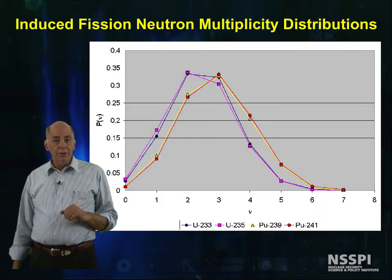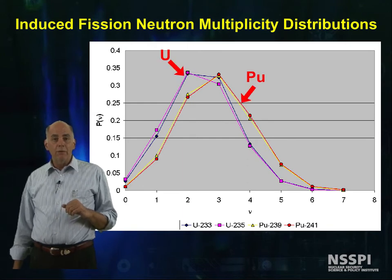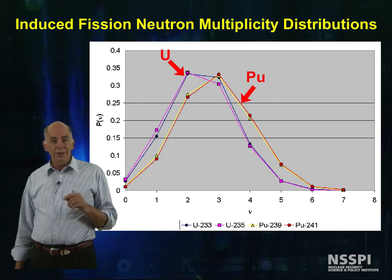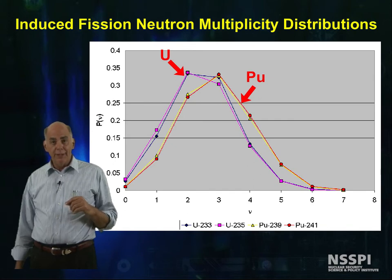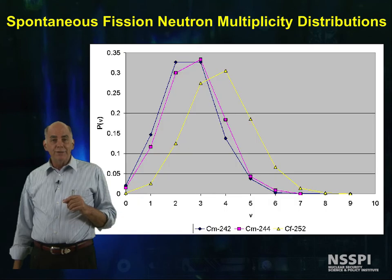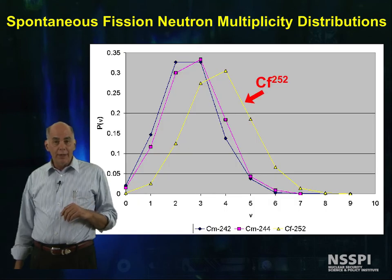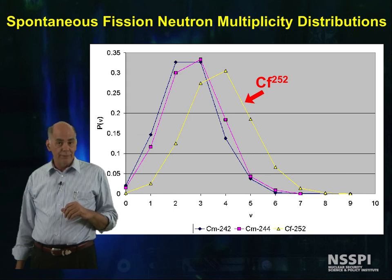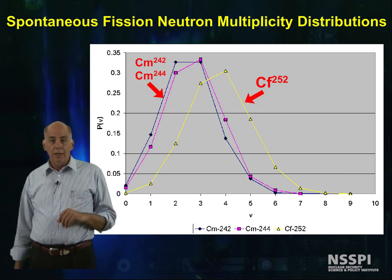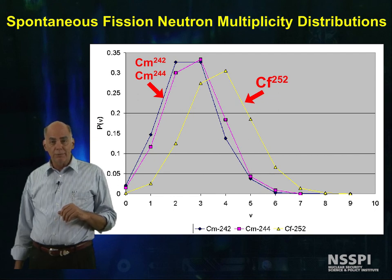Returning to look at the neutron multiplicity distributions, we see that for induced fission the multiplicity goes up with increasing Z, so that plutonium has a higher multiplicity than uranium. For spontaneous fission, californium is the only isotope with a high enough spontaneous fission rate to make measurements easy. You can see that as the mass number increases, so does the neutron multiplicity.